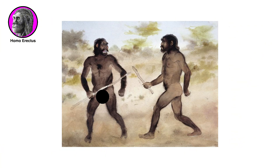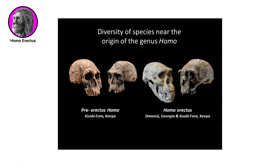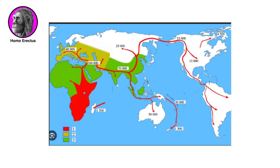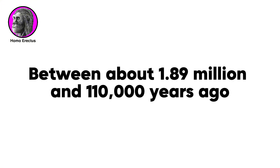Homo erectus had the ability to walk and possibly run long distances. Compared with earlier fossil humans, note the expanded brain case relative to the size of the face. Homo erectus is considered a highly variable species spread over two continents and possibly the longest-lived early human species — about nine times as long as our own species, Homo sapiens, has been around.